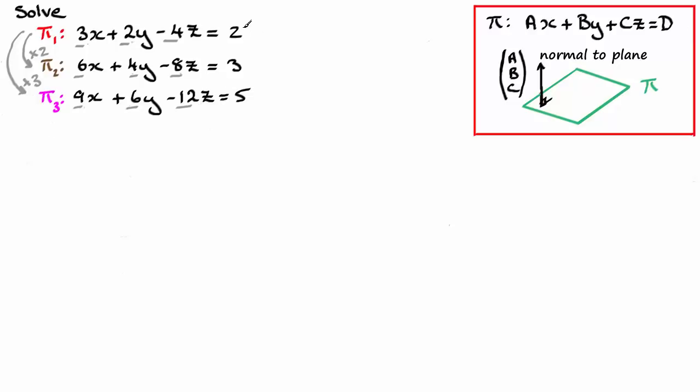Notice, by the way, that these values on the end, the constant d, doubling the two does not give me the three, and multiplying the two by three doesn't give me five. So what this represents are three different planes. However, they are all parallel.